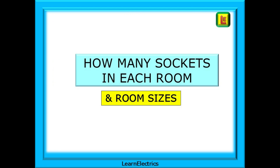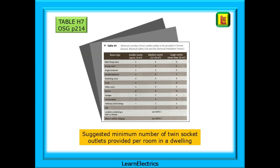Another question that is often asked: how many sockets should I install in each room? Fortunately, there's a table for this in the on-site guide. Table H7 on page 214 is where we should be looking — what is the room used for, how big is the room, etc. Of course, this is a suggested minimum number of sockets, and the customer and designer may wish to modify these numbers.